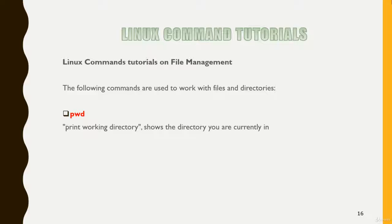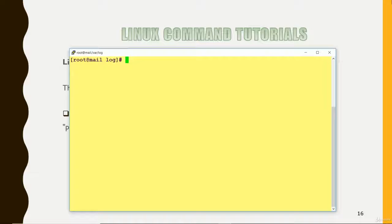I'm just going to log into my Linux box and show you how we can use this command. So I'm logging in here. You can see that I'm at this location, but I don't know what my current location is. So I can simply run the PWD command and it will tell me that I am in slash var slash log. So this is the directory where I'm currently in.